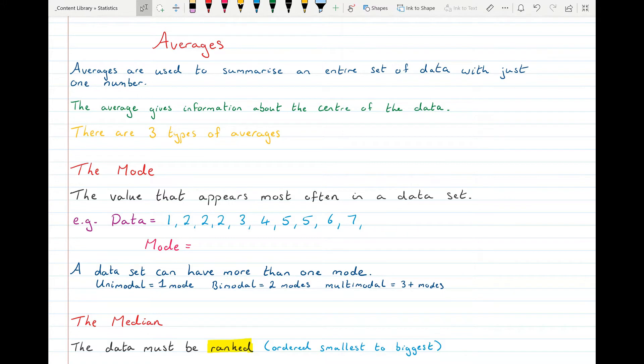So if we all go into a shop and spend some money, you can imagine that if we took the average of what we all spent, that'd be a good piece of information to have to tell us about how much people usually spend inside the shop. And it gives us information about the center of the data. So averages look at the middle values. And there are three types that we need to know about.